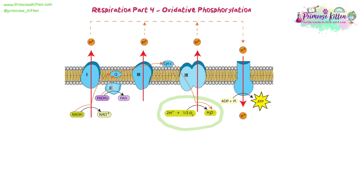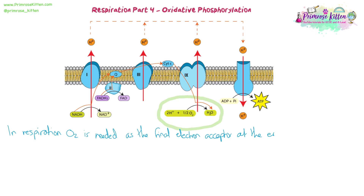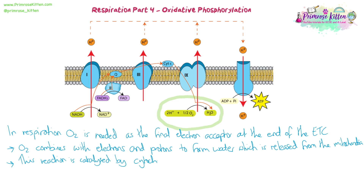We need to talk about oxygen. Oxygen is needed in this part of respiration as the final electron acceptor at the end of the electron transport chain. Once those electrons have moved through all those proteins, they have to go somewhere — if they have nowhere to go, they can't move through the process at all. Oxygen accepts the final electron and combines with hydrogen ions free in the matrix to make water. So there we have one of our reactants and one of our products of respiration. This reaction is catalyzed by an enzyme called cytochrome oxidase, seen towards the end of the chain in diagrams.